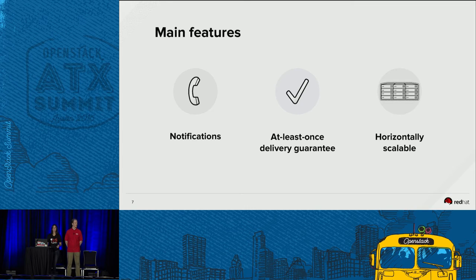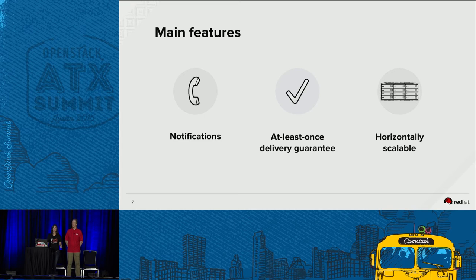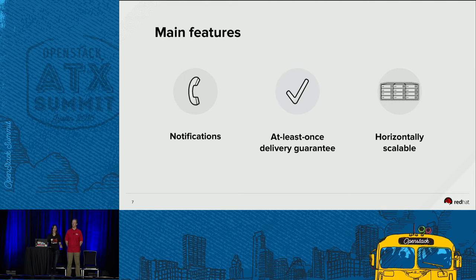Zakhar also has built-in notifications. You can subscribe to a queue and get messages every time a new message comes in. We guarantee at-least-once delivery — you have to take this into account when developing your application because there's a possibility you get a message twice. In messaging systems, you can have at-least-once or at-most-once delivery, and we considered the best option is to get redundant messages but avoid losing messages. Finally, Zakhar is horizontally scalable — we have a feature called Pools that allows you to have different entry points and storage locations for all the data you're handling.